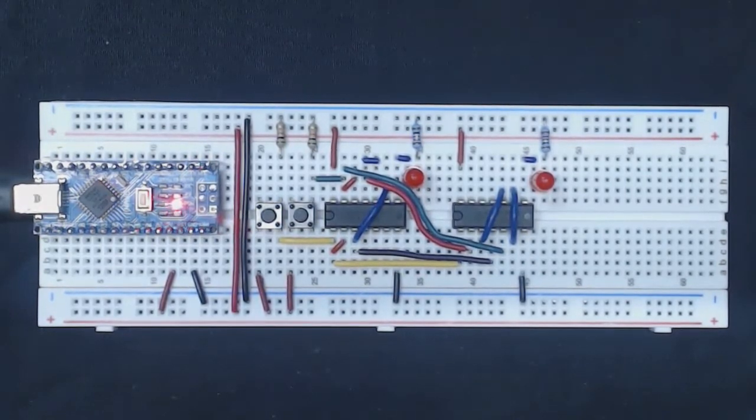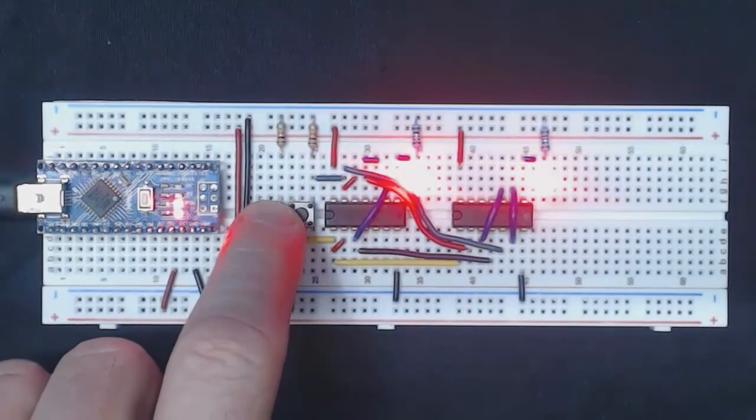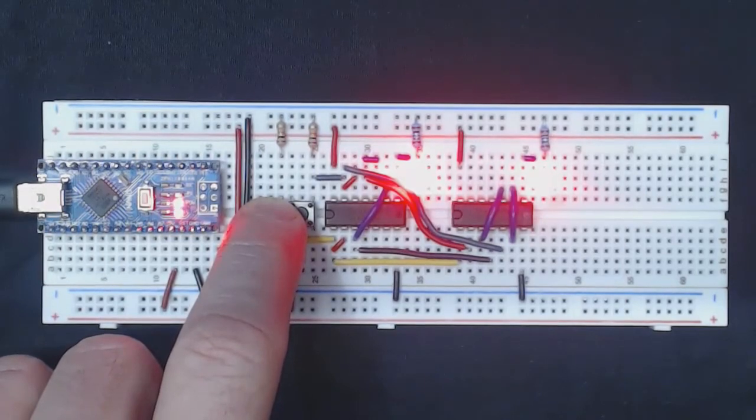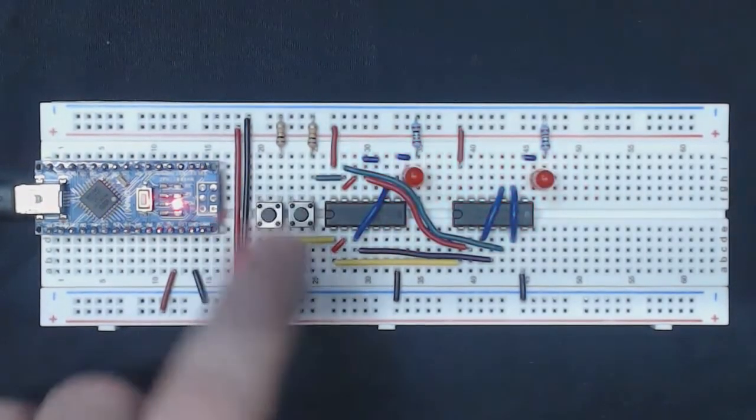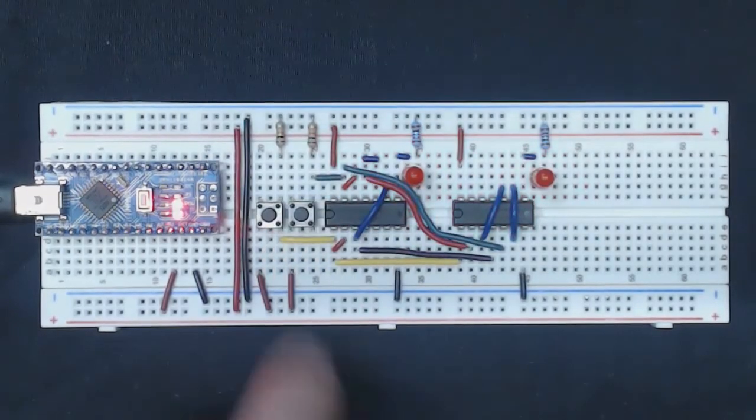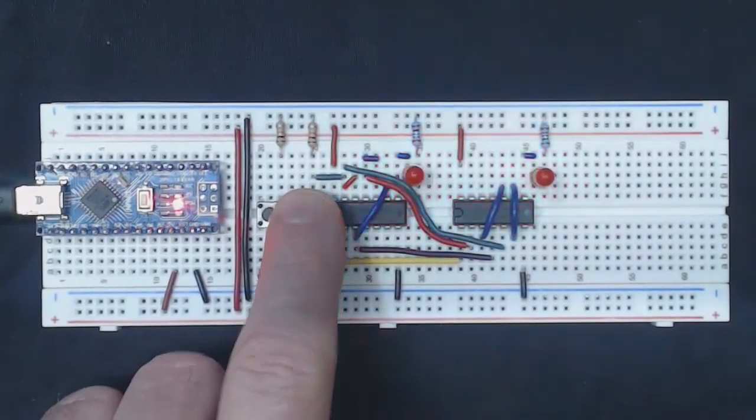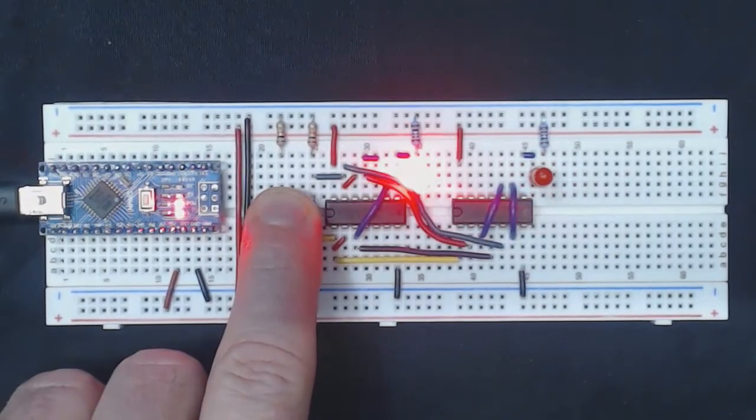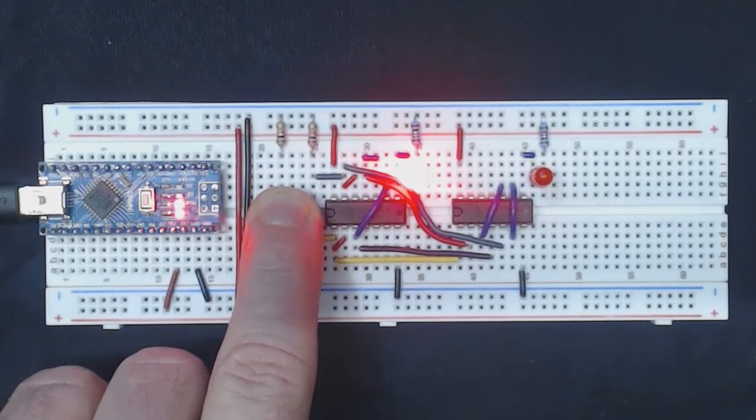Let's plug this in and see how it behaves. So far so good—we're getting results that we expect considering the truth table we looked at before. Both A and B are off, both outputs are off. Now let's turn on A. We can see both outputs turn on for the OR gate as well as the XOR gate. If we press B, we should get similar results, and indeed that's what happens. As long as we keep pressing only A or only B, we have the same results. Now if we press both at the same time, we can see the output of the OR gate is on, but the XOR gate is off.